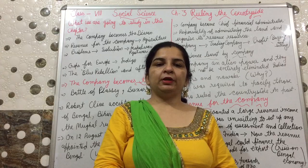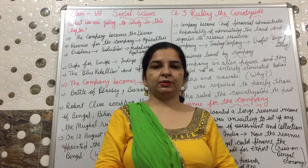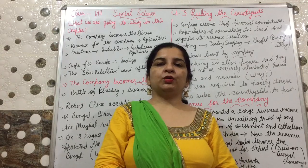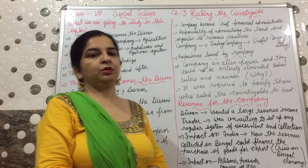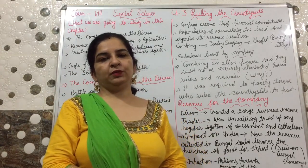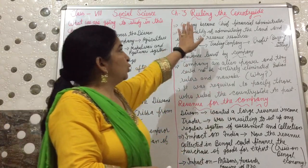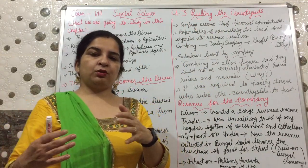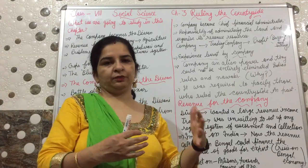The Diwani right means they now had the right to collect taxes. In the second chapter we learned that they got control over the cities like Bengal. Now they started their control over the countryside as well, meaning in the villages also. So in this chapter we will discuss 'Ruling the Countryside' — how the British, after controlling the cities, gradually started extending their control towards the villages and countryside.